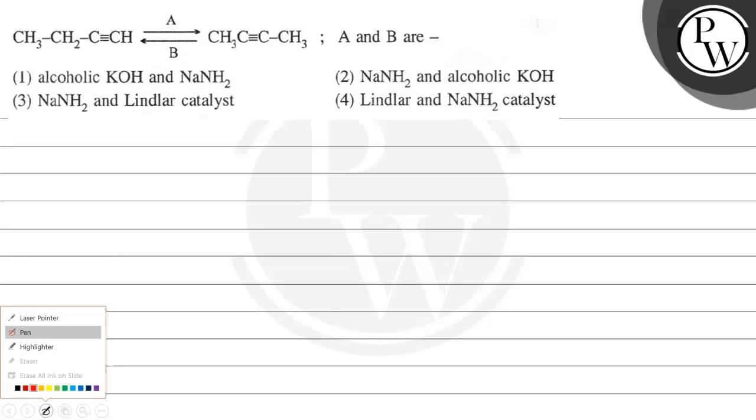Hello guys, let's read this question. The question says CH3 CH2 C triple bond CH which is a terminal alkyne in presence of A gets converted to CH3 C triple bond C then CH3, and that internal alkyne is in the presence of B again in the terminal alkyne. So A and B are, and we have four options over here.